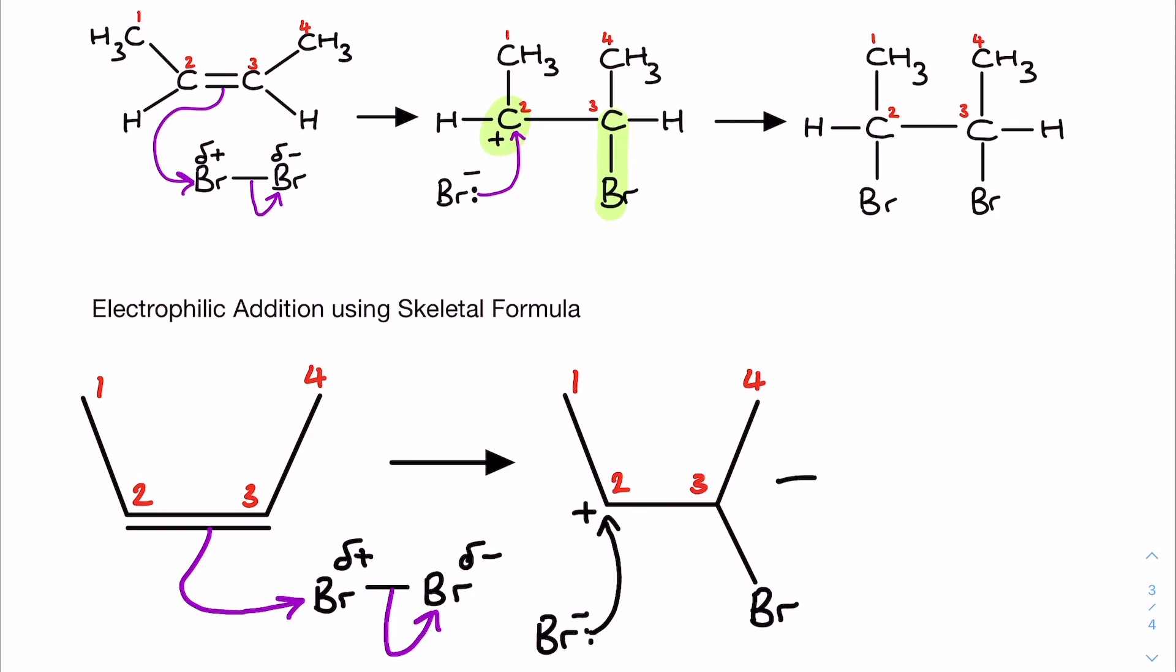This then takes us to the final structure which we are going to show in full skeletal just to be nice and consistent with this. So there we are. I've got carbons 1, 2 and 3. There's carbon number 4. I'm now going to have carbon number 2 with its bromine and carbon number 3 with its bromine like so.